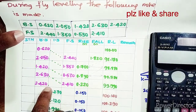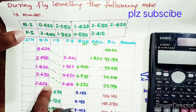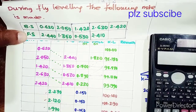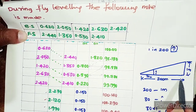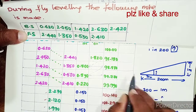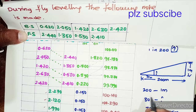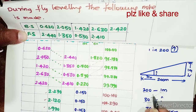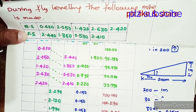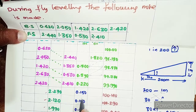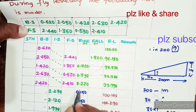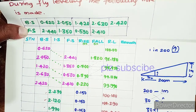From the last backsight, we fix pegs every 30 meters. The concept is: for a rising gradient of 1 in 200, for every 200 meters there is a 1 meter rise. So for 30 meters: 30 × 1 ÷ 200 = 0.15 meters. This rise of 0.15 is entered in the Rise column for each of the four peg intervals.